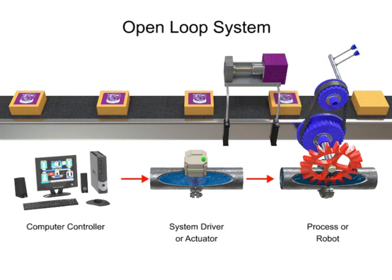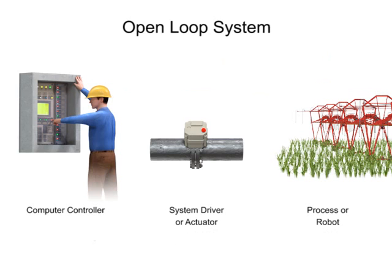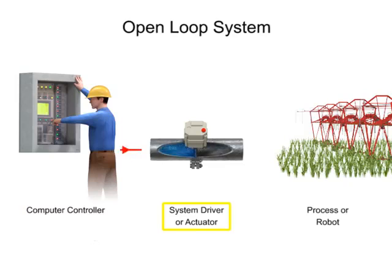A simple example of an open-loop system is an industrial sprinkler system. In this example, the programmer updates the computer controller, which will turn the sprinkler on at a designated time. When the computer sends the signal, the water valve will turn on.